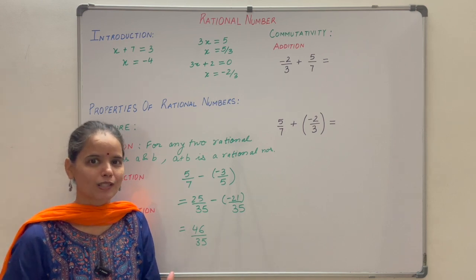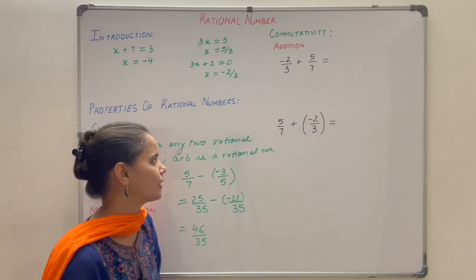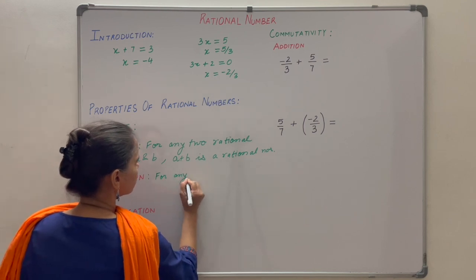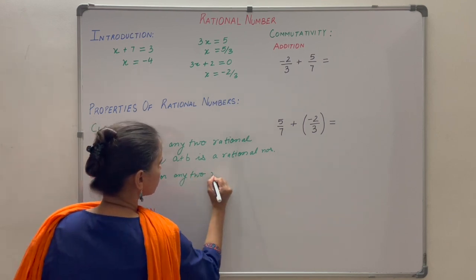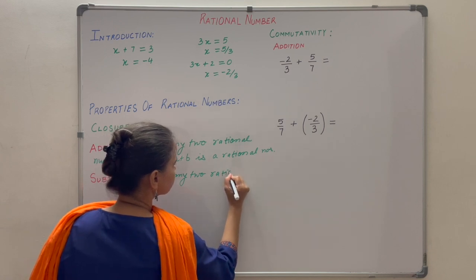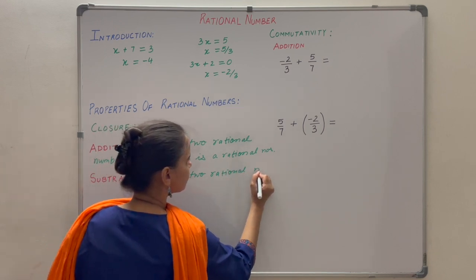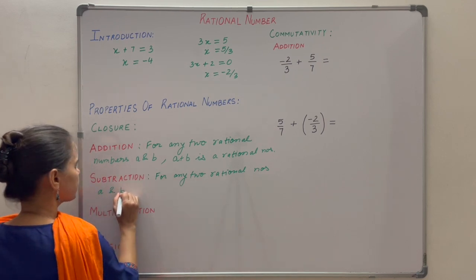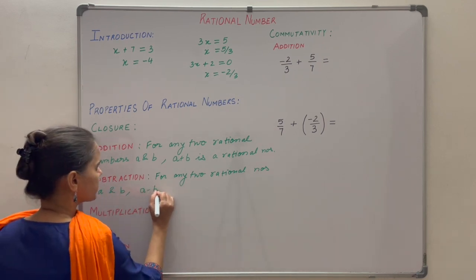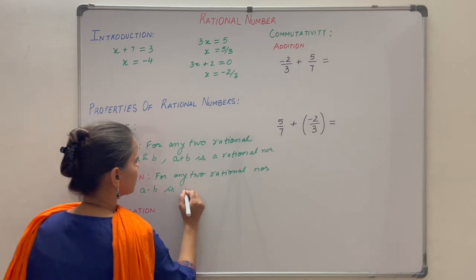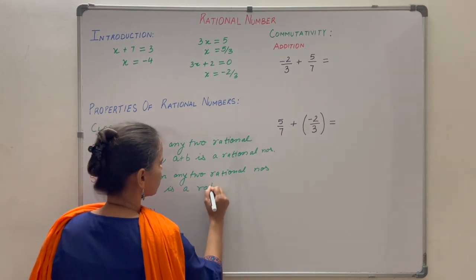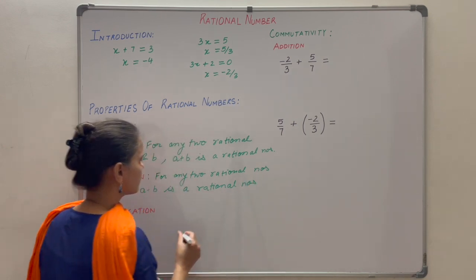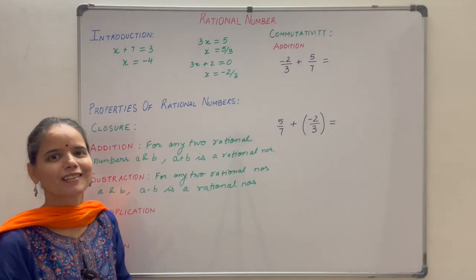That means rational numbers are closed under subtraction. For any two rational numbers A and B, A minus B is a rational number — it is always closed under subtraction.